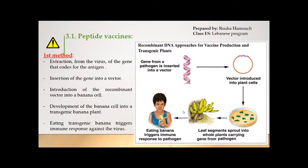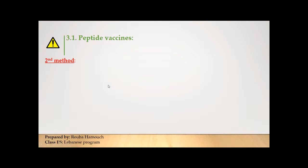When we eat the banana, we also consume the viral antigens, because the transgenic banana — having integrated the viral gene — produces the viral antigens. These viral antigens are considered non-self to the body, so our immune system triggers an immune response and an immunological memory against this virus. The transgenic banana is itself the vaccine. This is the first method to produce peptide vaccines — through transgenic plant cells such as fruits or vegetables.